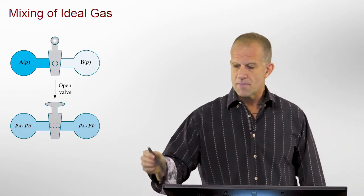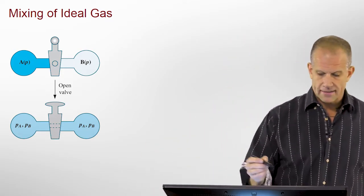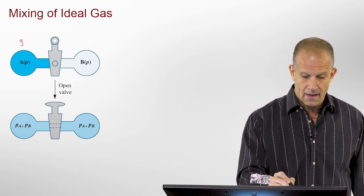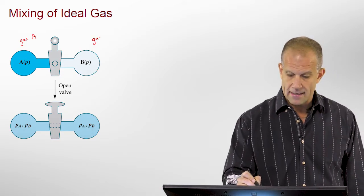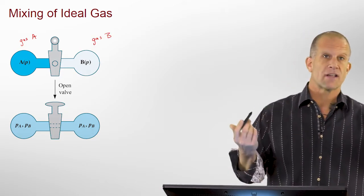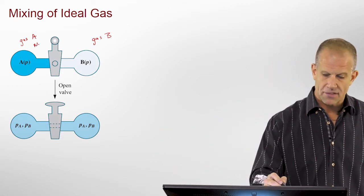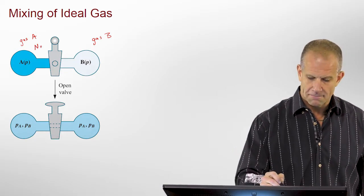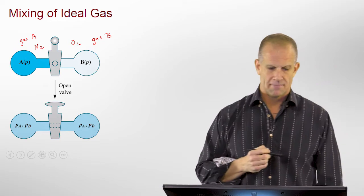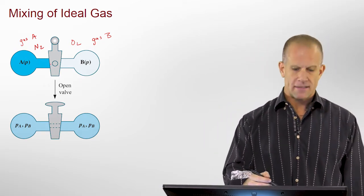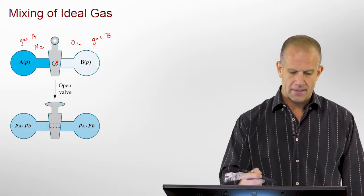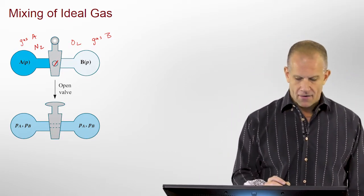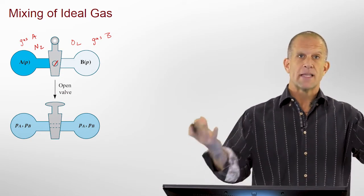So we want to motivate this by looking at something fairly simple. We just have a gas A on one side and a gas B on the other side, two different gases, say nitrogen gas and oxygen gas, for example. And we have them separated physically with a stopcock at the moment. And then we open the valve and these two gases don't react, but they do mix.